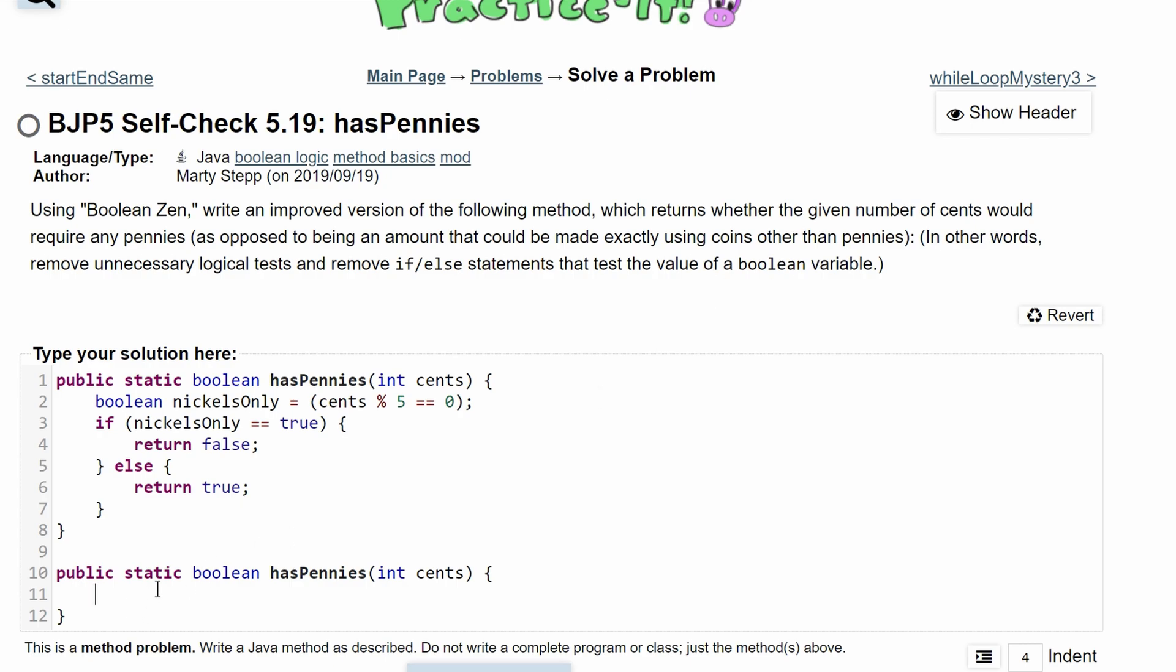So we want to return whether the given number of cents, cents modulus 5, because if it has a remainder other than zero, we need to add pennies to this amount.